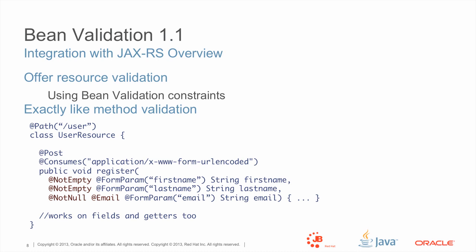In our example, we have a UserResource tied to a given path. When we POST to this path, the register method is called. We make sure that the form param firstName is not empty, lastName is not empty, and the email is a valid email and not null. If validations pass, we execute the register method. But if there's a validation constraint violation, Bean Validation raises the validation exception, and JAX-RS looks at this exception and transforms it into an HTTP error code. The HTTP client will receive the right error code — in this case a 400 — because the client didn't provide the expected parameters.